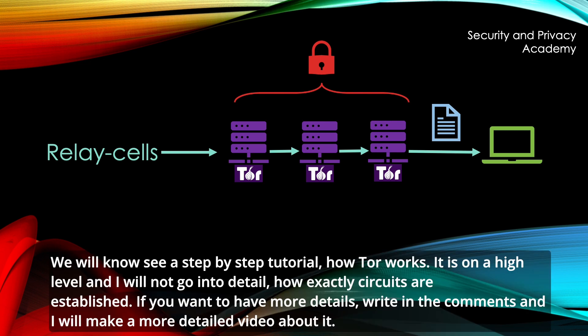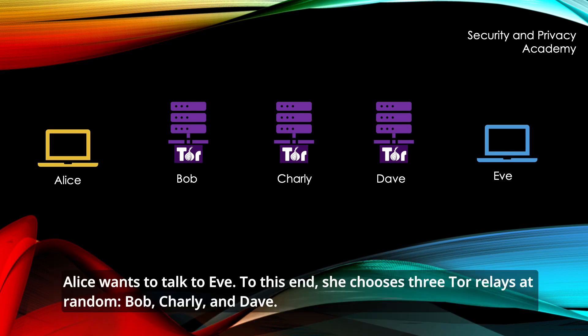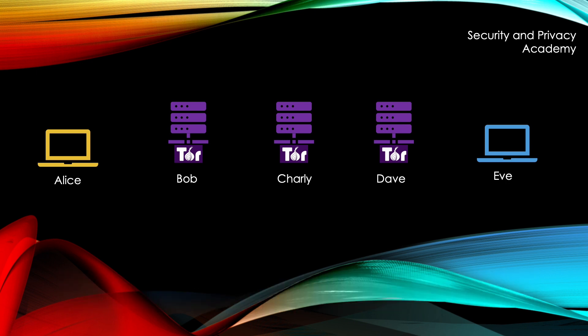We will now see a step-by-step tutorial on how TOR works. It is at a high level and I will not go into detail on how exactly circuits are established. Alice wants to talk to Eve. To this end, she chooses three TOR relays at random: Bob, Charlie, and Dave.